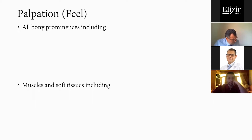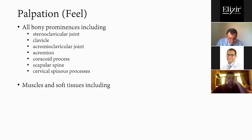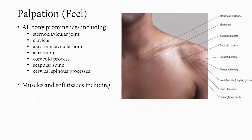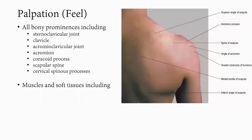Then palpate the shoulder, starting with the bony prominences. It's important to have a direction — medial to lateral or lateral to medial — so you don't miss any point. You can start medially by palpating the sternoclavicular joint, the clavicle, the acromioclavicular joint, the acromion, the coracoid process, and the humeral head. From the front, palpate the bicipital groove in neutral rotation, one centimeter lateral to the coracoid process. From the back, palpate the scapular spine, scapular borders, infraspinatus, and supraspinatus muscles.